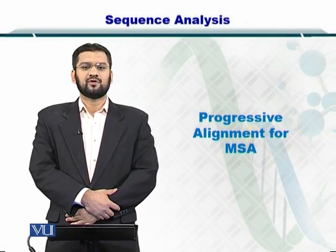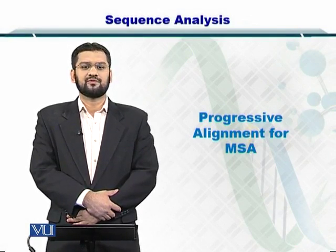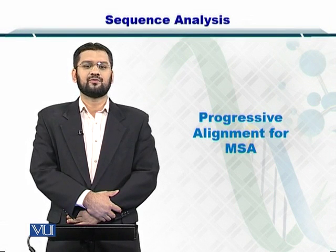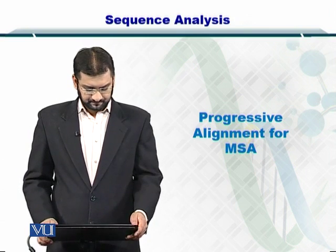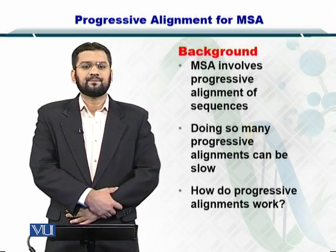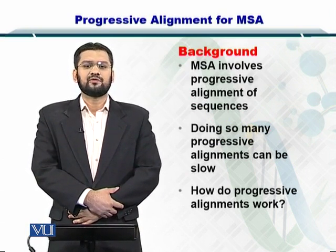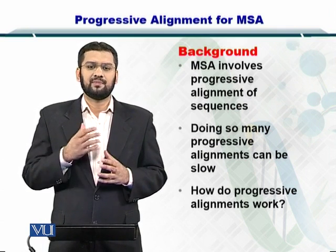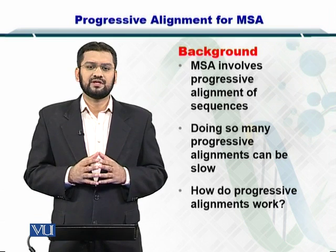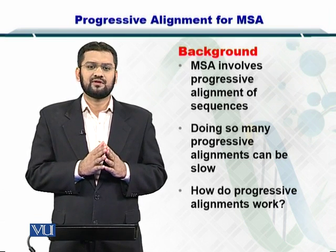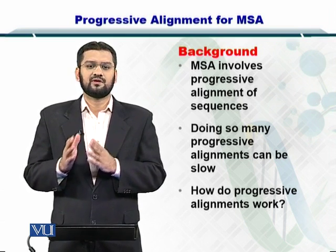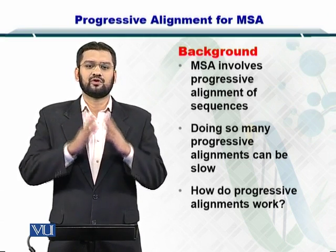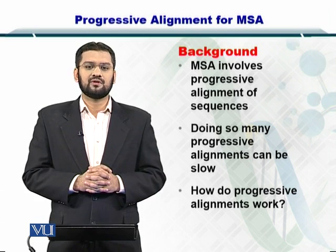Dear students, in this module we are going to discuss progressive alignment for multiple sequence alignment, or simply progressive alignment for MSA. MSA involves progressive alignment by using pairwise sequence alignment repeatedly. You initially align two sequences, create sequence alignment pairs, and then align the pairs in order to obtain an overall multiple sequence alignment.